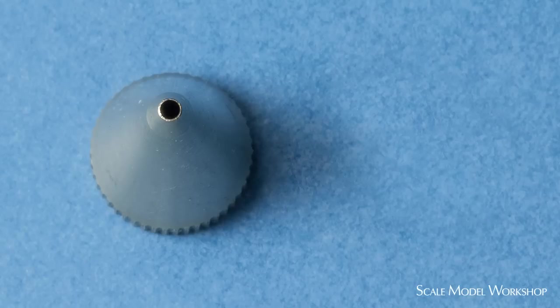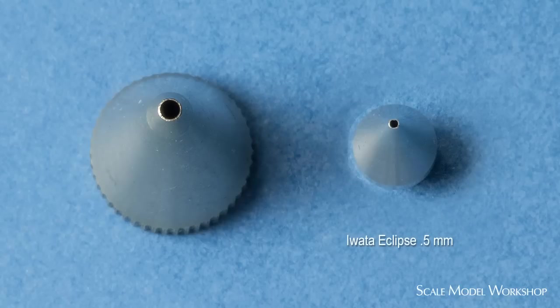Here's a number 3 paint nozzle from a Pache H. Now, no one knows how large the number 3 is, only that it's larger than a number 1 and smaller than a number 5. Here it is next to a 0.5mm nozzle from an Iwata Eclipse.